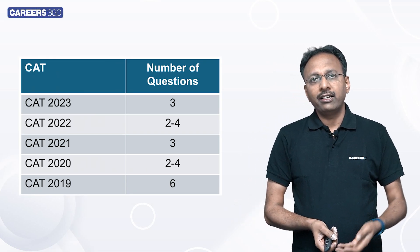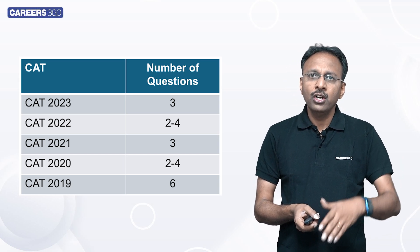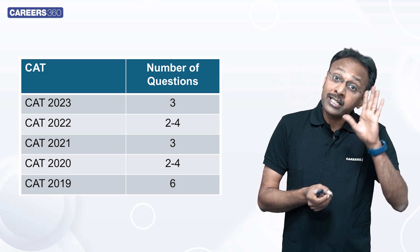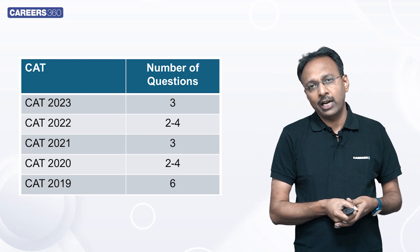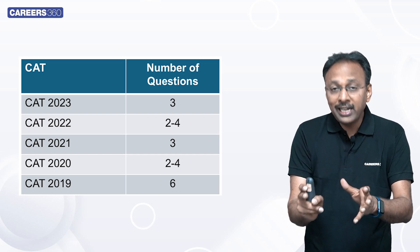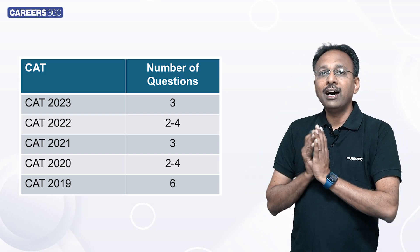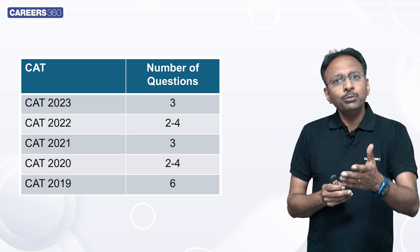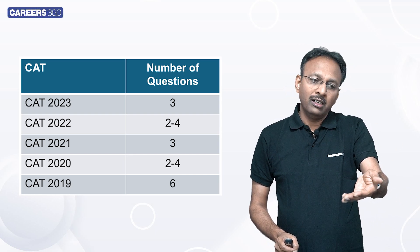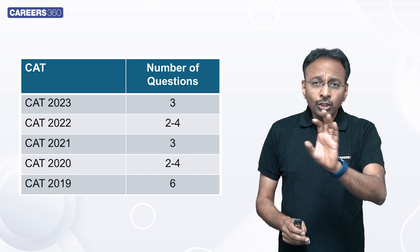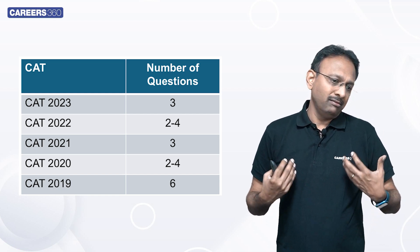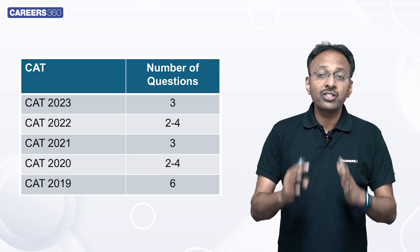If you look at CAT 2023, each slot had on average three questions. Two to four questions in 2022, three questions in 2021, two to four in 2020, and six questions in 2019 — when the number of questions overall was higher. So geometry can give you six to nine marks minimum. Trust me, 15 marks will get you the 85 percentile cutoff for even IIM Lucknow. One topic that requires only formulae and solving a few questions can get you there.